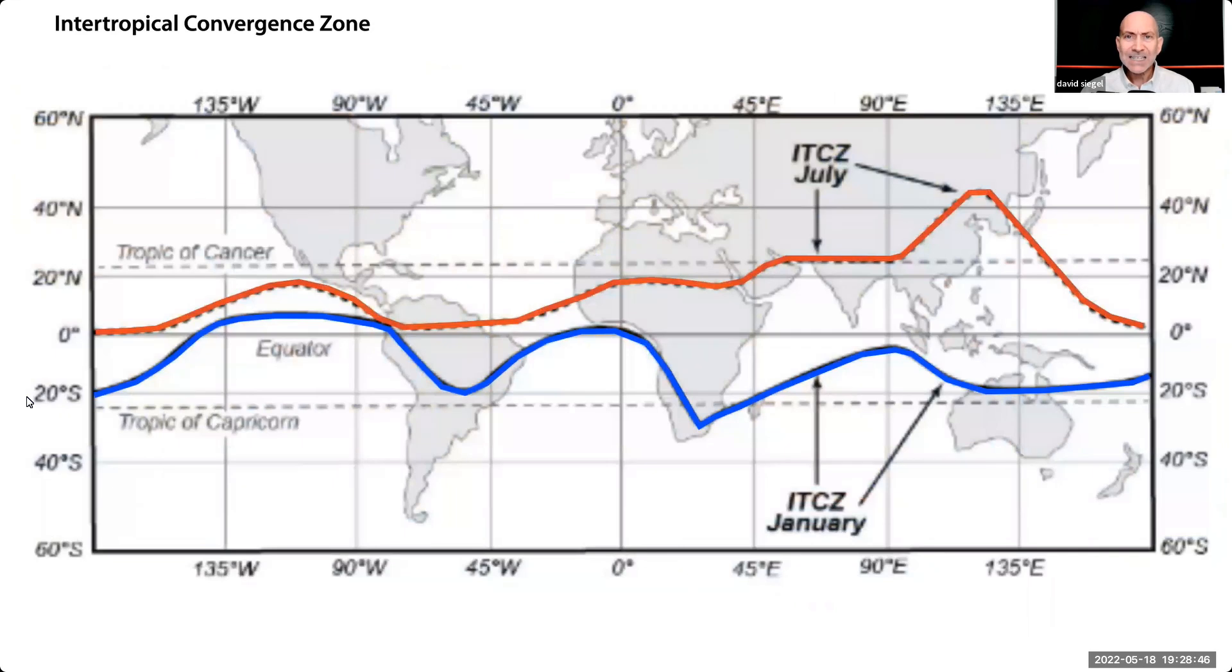And it's driven by the ITCZ, the Intertropical Convergence Zone, also known as the doldrums, which defines the tropics and creates the weather and pressure patterns in each hemisphere. The ITCZ changes according to the sun pattern and the layout of the continents.